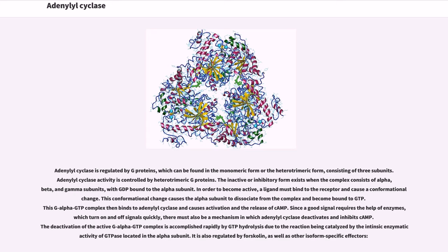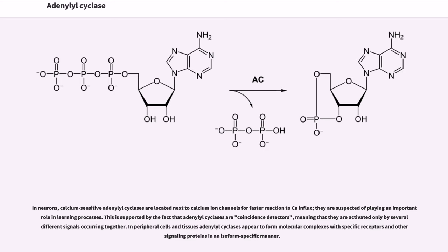It is also regulated by forskolin, as well as other isoform-specific effectors. In neurons, calcium-sensitive adenylyl cyclases are located next to calcium ion channels for faster reaction to calcium influx; they are suspected of playing an important role in learning processes. This is supported by the fact that adenylyl cyclases are coincidence detectors, meaning that they are activated only by several different signals occurring together.